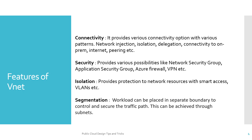VNet has features like connectivity, security, isolation, and segmentation. Connectivity provides various options with patterns such as network injection, network isolation, delegations, connectivity to on-prem systems, connectivity to internet, and peering. Peering means one VNet is communicating to another VNet, having access to the whole IP ranges of another VNet.